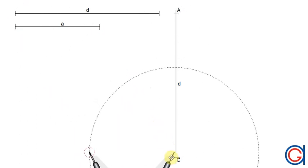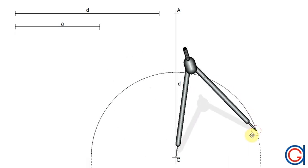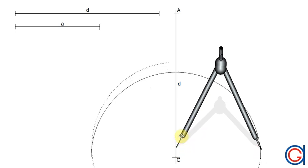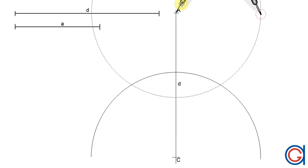Now setting the compass on vertex C, we are going to describe a large arc or semicircle. And now with the same radius and setting the compass on vertex A, we are going to describe another arc.